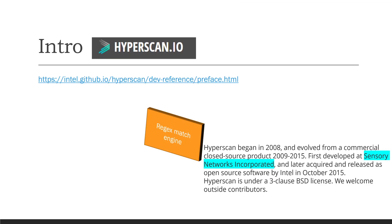Let's do a quick intro of Hyperscan. Hyperscan began in 2008 and evolved from a commercial closed source product developed by Sensory Networks Incorporated. It was later acquired and released as open source software by Intel in October 2015. Hyperscan is three-clause BSD licensed and they are welcoming outside contributions.